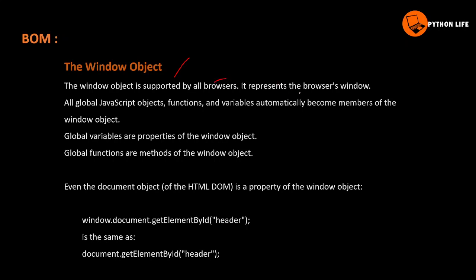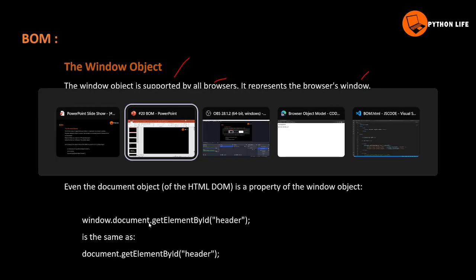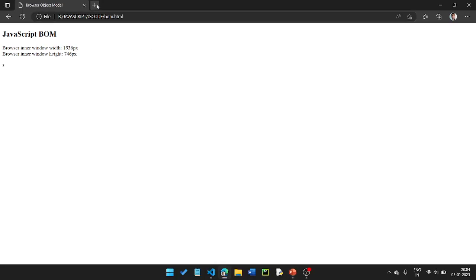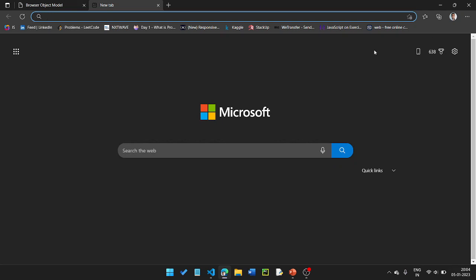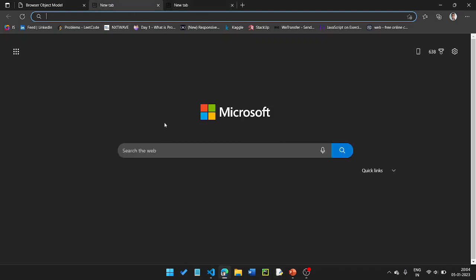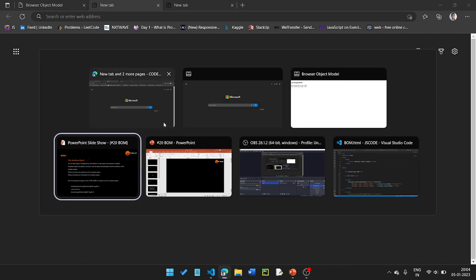The window object is supported by all browsers. It represents the browser's window — essentially a tab window. All global JavaScript objects, functions, and variables automatically become members of the window object.